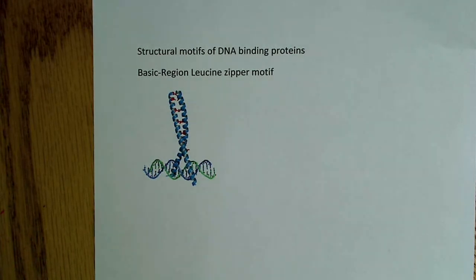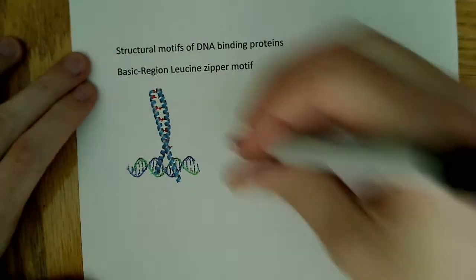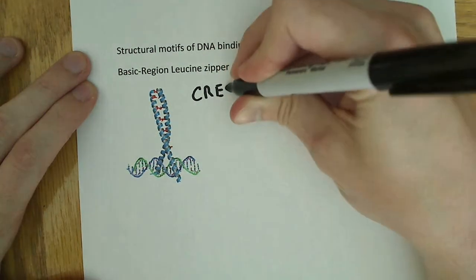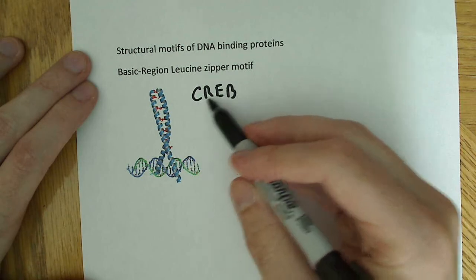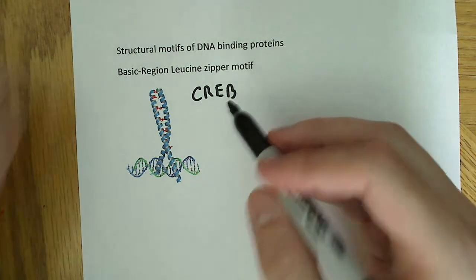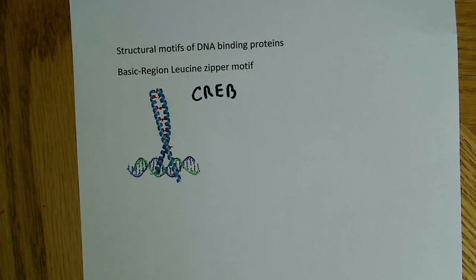A lot of transcription factors are known to contain this motif. One of the common transcription factors is actually what's known as CREB — cyclic AMP response element binding protein. That actually contains this motif, this basic region leucine zipper.